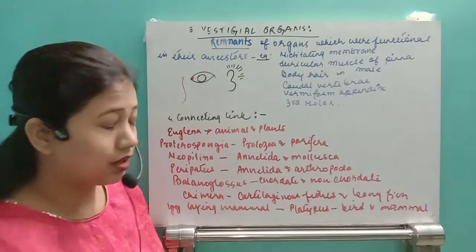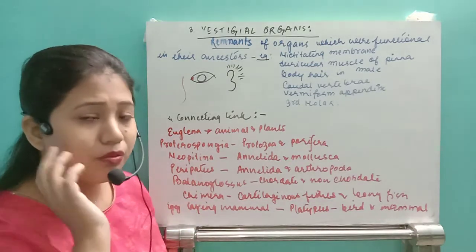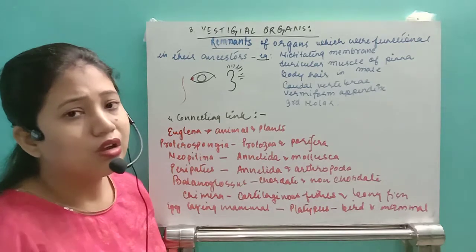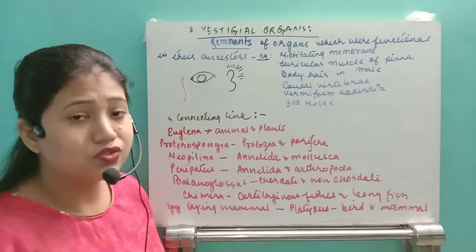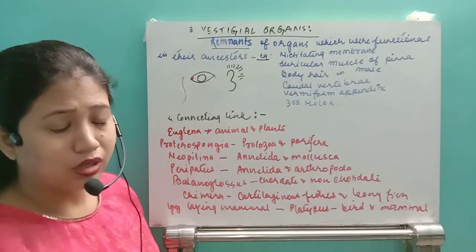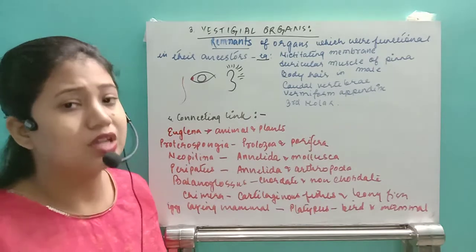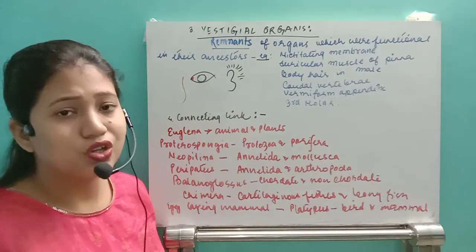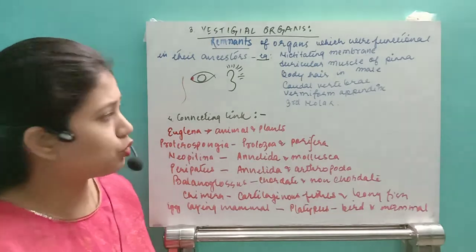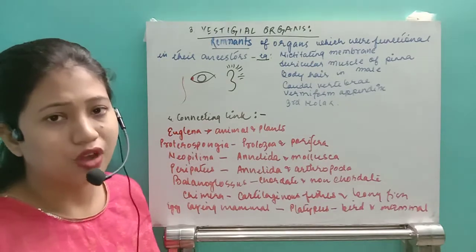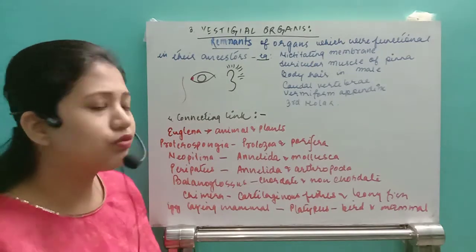The next vestigial organ is body hair. In males, chest hair or beard is present, which is actually fully functional in other mammals like cows and goats. In human males it is present as a vestigial organ but is not functional — even if it were absent, it would not harm the individual.